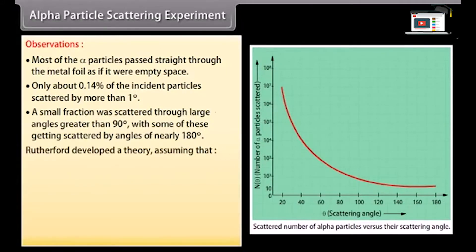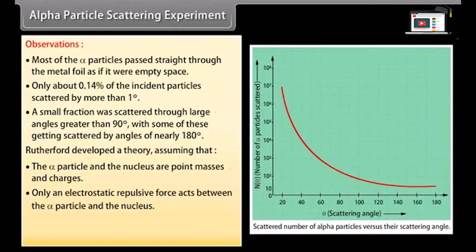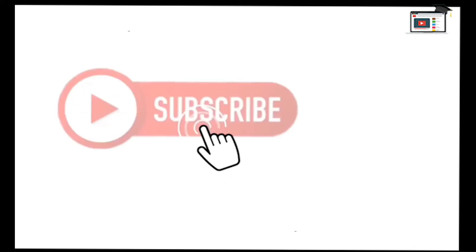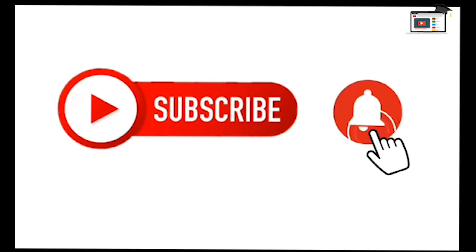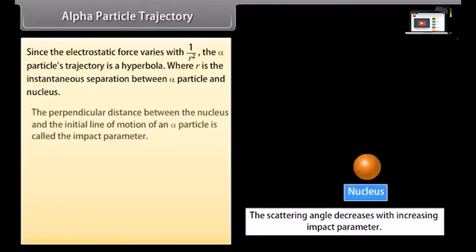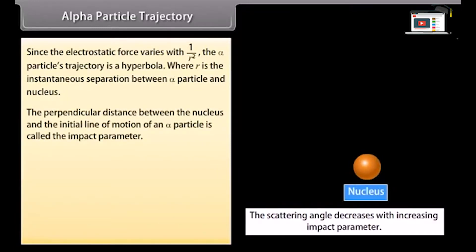Rutherford developed a theory assuming that the alpha particle and the nucleus are point masses and charges, and only an electrostatic repulsive force acts between them. The nucleus is so massive compared with the alpha particle that it does not move during the interaction. Since the electrostatic force varies with 1/R², the alpha particle's trajectory is hyperbolic, where R is the instantaneous separation between the alpha particle and nucleus. The perpendicular distance between the nucleus and the initial line of motion of an alpha particle is called the impact parameter.